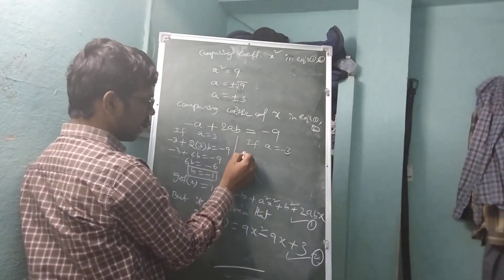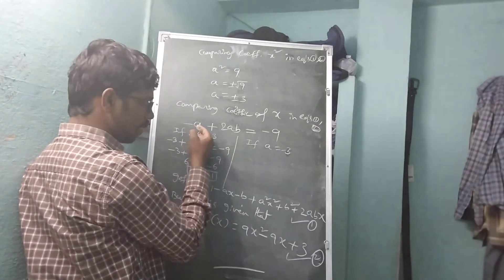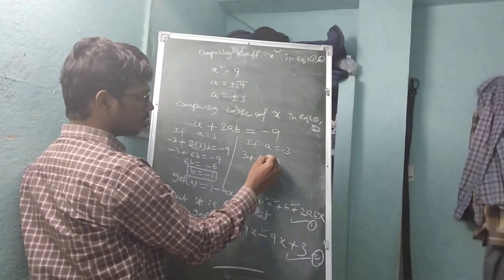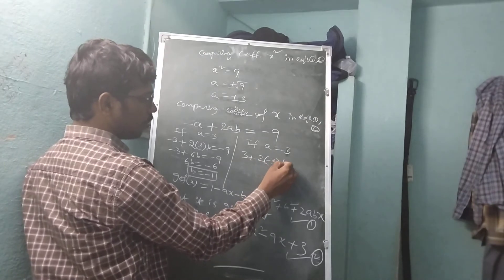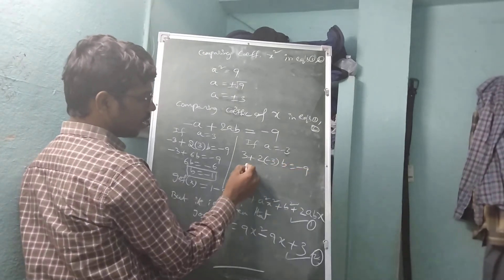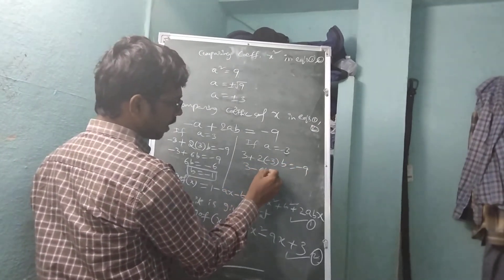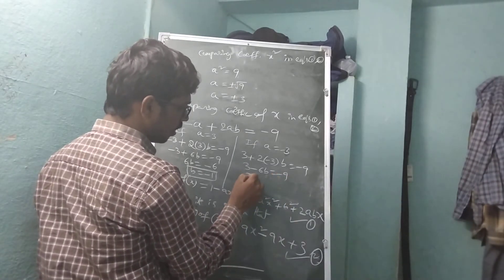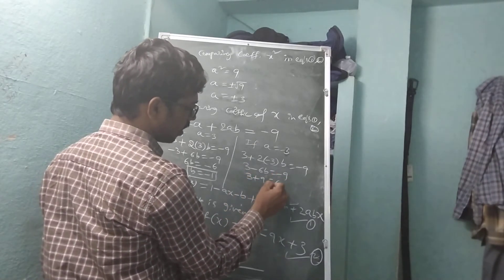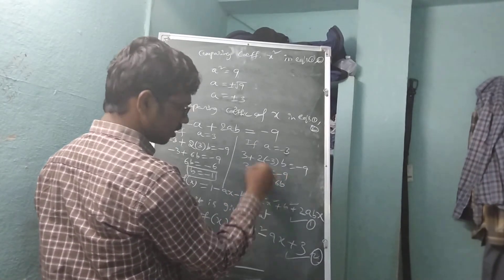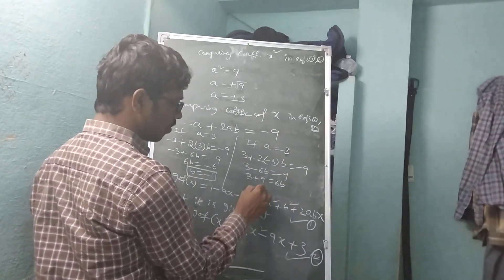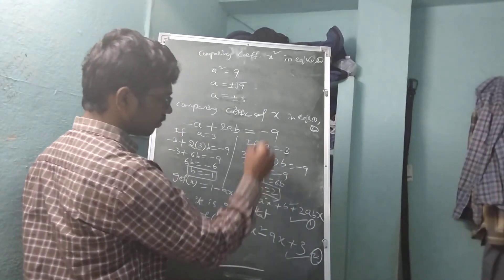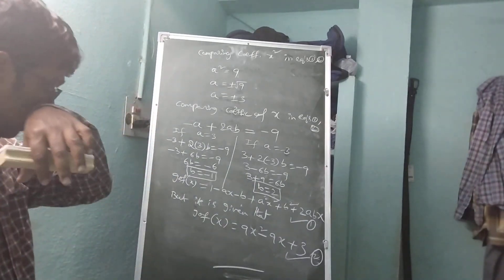If a equals minus 3: substituting gives 3 plus 2 times minus 3 times b equals minus 9, so 3 minus 6b equals minus 9. Therefore 3 plus 9 equals 6b, giving 12 equals 6b, so b equals 2.